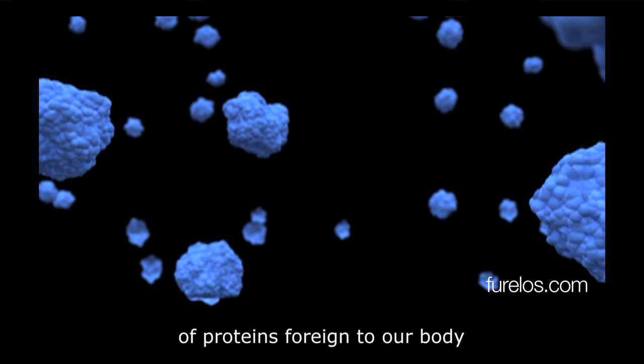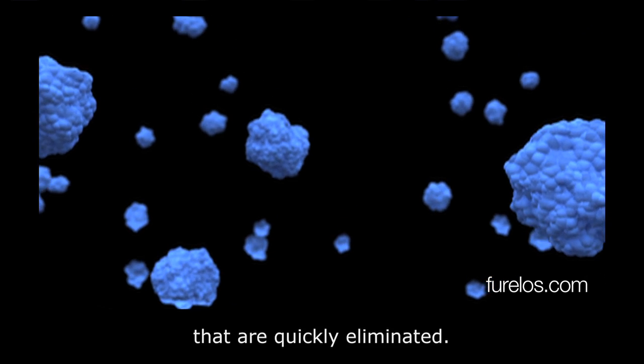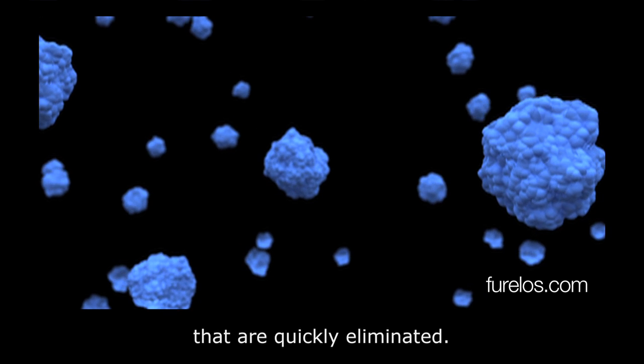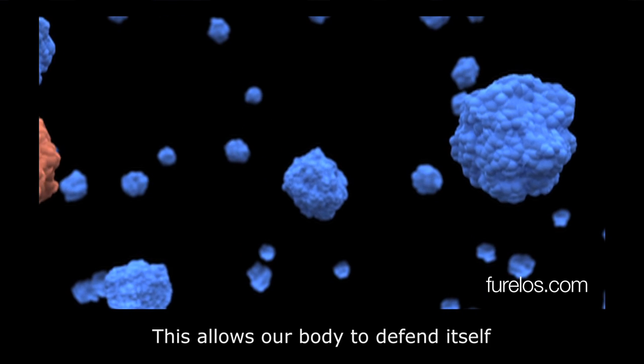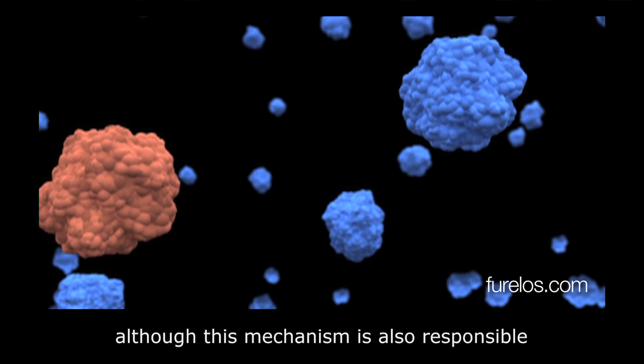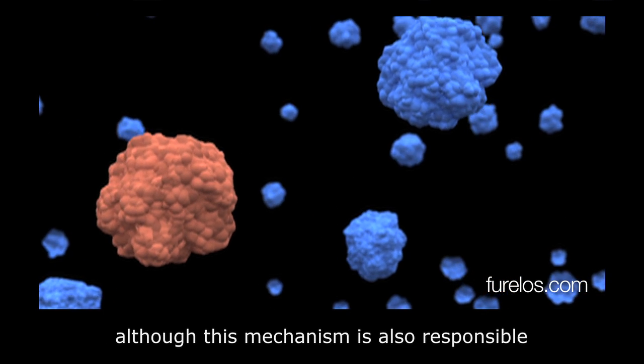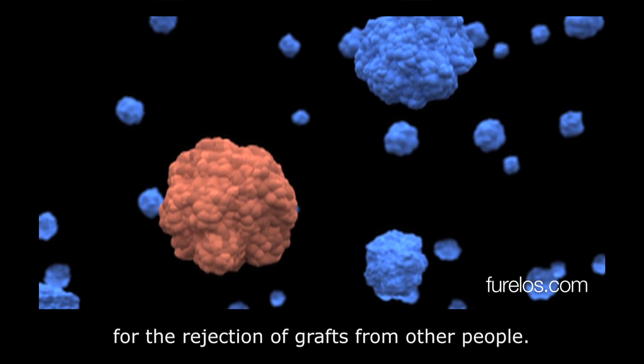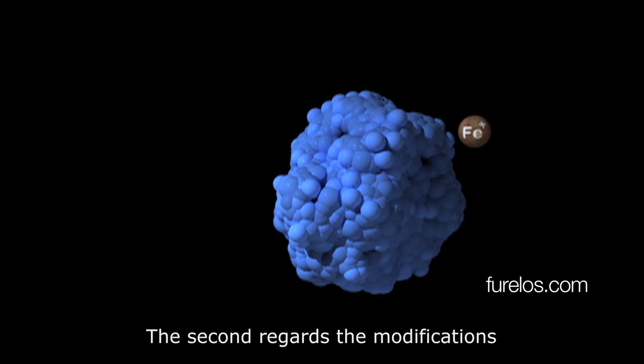This allows our body to defend itself against bacteria and viruses, although this mechanism is also responsible for the rejection of grafts from other people. The second regards the modifications the metal ions produce in our proteins, triggering a defensive reaction and rejection of the metallic agent.